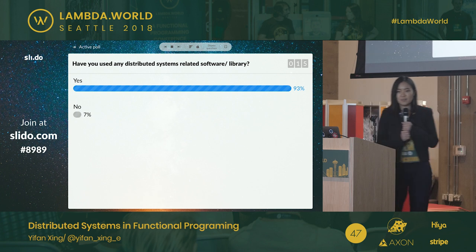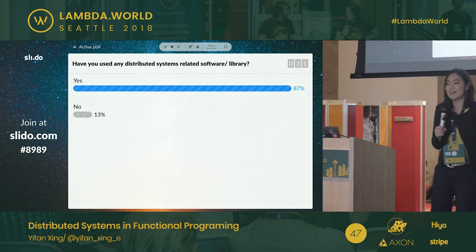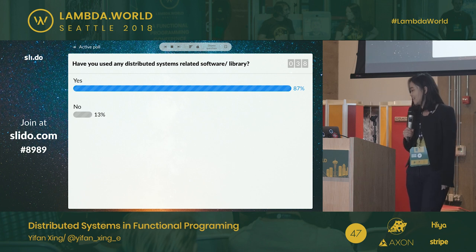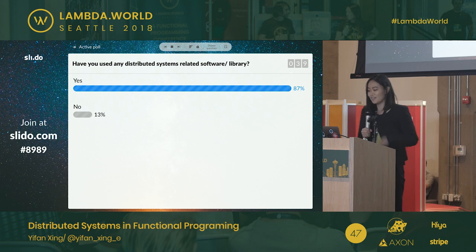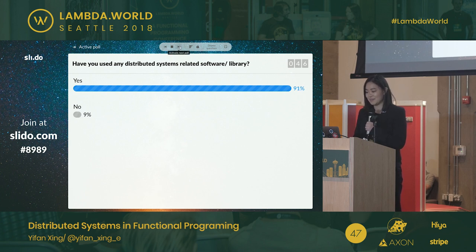Have you used any distributed system related software or libraries? When we talk about distributed system software, one example would be email. So we've used emails before. 9% — let's move on to the next question.